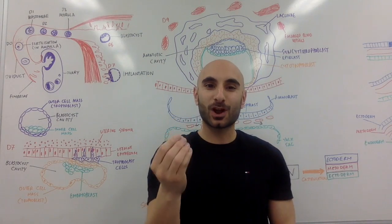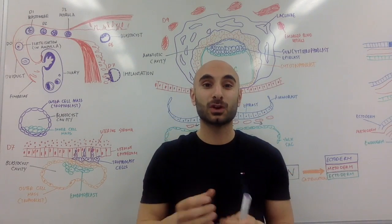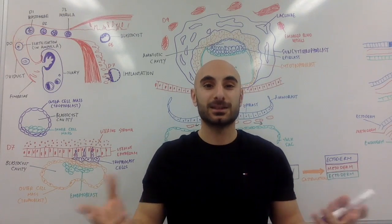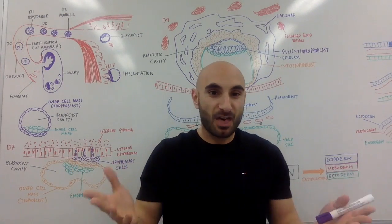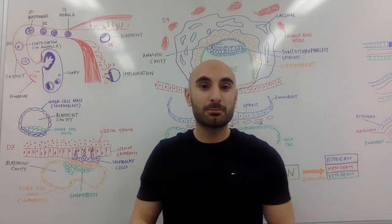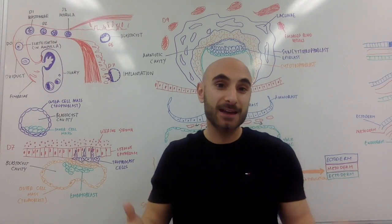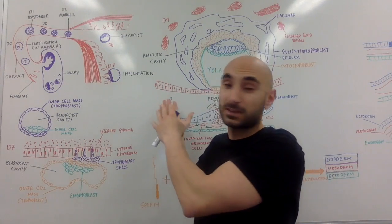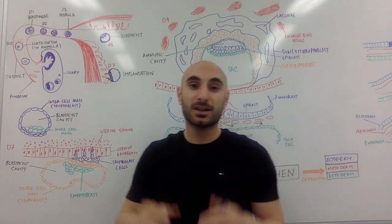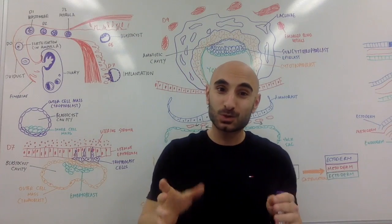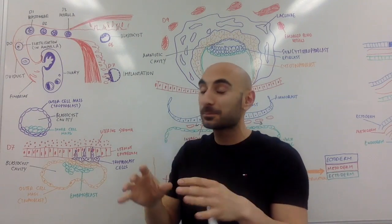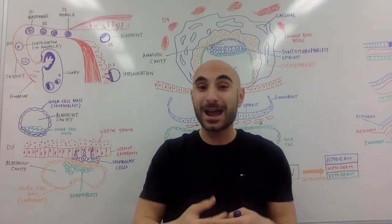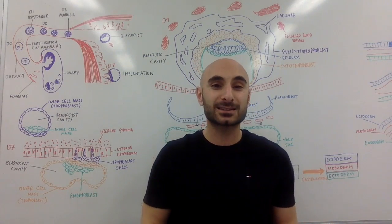In a nutshell, embryology is the process of turning two cells, a sperm and an egg, into a human. That's pretty much it, but a billion PhDs can be had in any of these steps. I've drawn a lot of things up on the board, and don't worry, we're going to go through it very simply, we're going to break it down into steps, and I'm going to explain it in a way so that everyone will understand it.